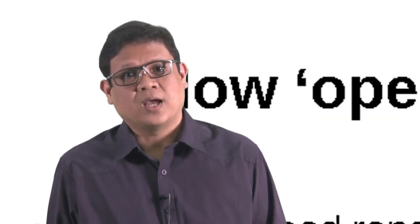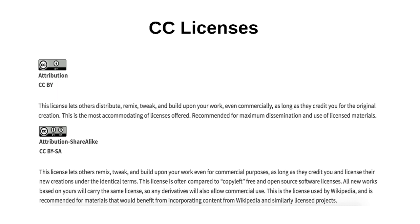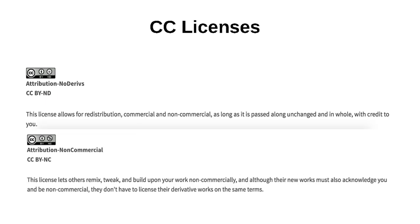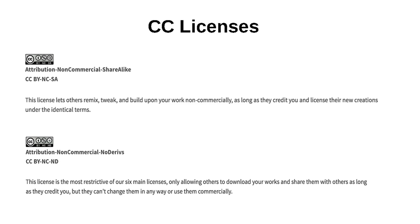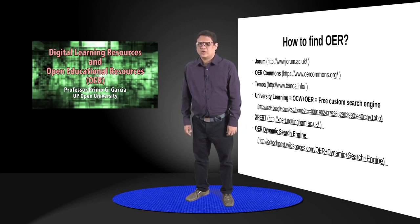How open is an open license? There is a broad range of legal frameworks governing OER use, but the most common example is Creative Commons (CC). Creative Commons ensures that authors can retain acknowledgement for their work while allowing it to be shared, can seek to restrict commercial activity if they wish, and can prevent adaptation if appropriate. The CC licenses include: Attribution, Attribution Share Alike, Attribution No Derivatives, Attribution Non-Commercial, Attribution Non-Commercial Share Alike, and Attribution Non-Commercial No Derivatives. For more details, visit creativecommons.org.